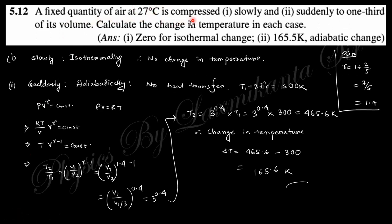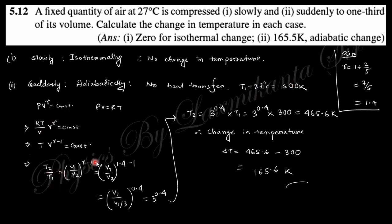Question 13: A fixed quantity of air at 27°C is compressed slowly and suddenly to one-third of its volume. Slowly means isothermal — no change in temperature. Suddenly means adiabatic — no heat transfer. For the isothermal case there is no temperature change. For the adiabatic case, using the temperature-volume relation T₁V₁^(γ−1) = T₂V₂^(γ−1), the final temperature can be found, and hence the change in temperature.